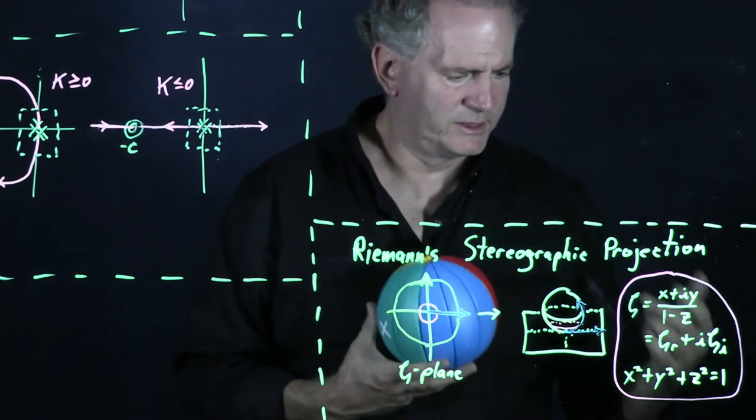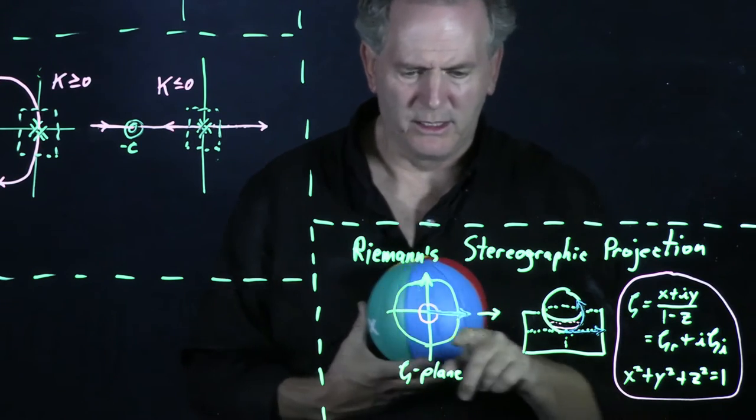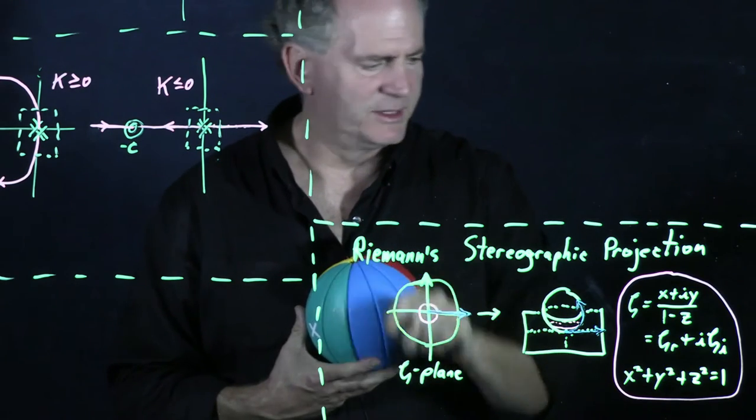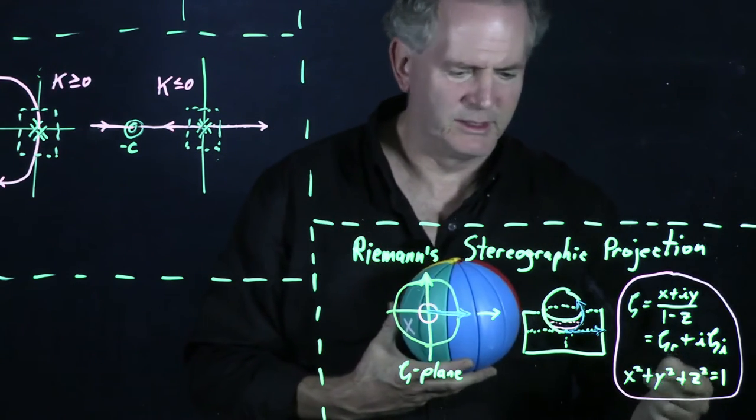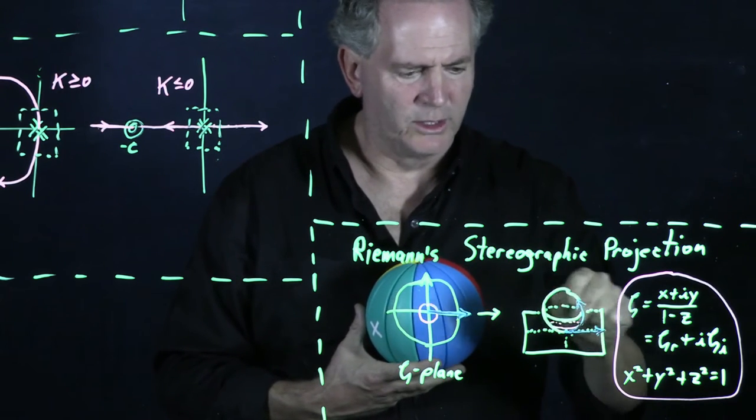And so if, for instance, x squared plus y squared is equal to one, which is satisfied on the circle, then our z squared is equal to zero, and we are on the equator.